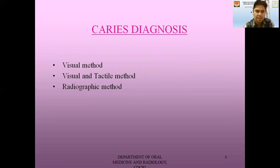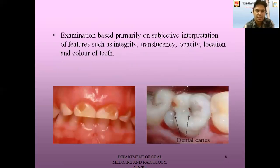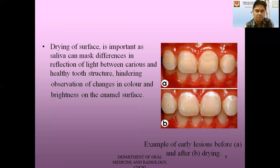Coming to how we diagnose caries, there are mainly three methods: visual method, visual and tactile method, and the radiographic method. The visual method is based on the use of a dental mirror, good lighting, and a clean and dry tooth surface. Examination is based primarily on subjective interpretation of features such as integrity, translucency, opacity, location, and color of the tooth. The drying of the surface is an important part of this method because saliva can mask the difference in the reflection of light between caries and healthy tooth structures, thus hindering the observation of changes in color and brightness on the enamel surface.